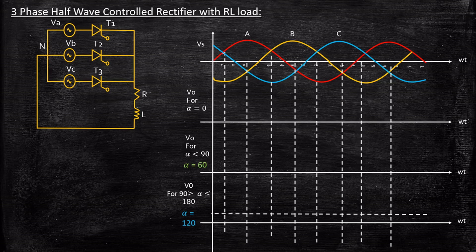Each thyristor conducts for 120 degrees each, since the overall cycle for each phase is 120 degrees — that is, the phases are 120 degrees apart. So each thyristor will be conducting for a total period of 120 degrees, which is 360 divided by 3. If you remember these two points — the minimum triggering angle is 30 degrees, and each thyristor conducts for 120 degrees — understanding the operation is very simple.